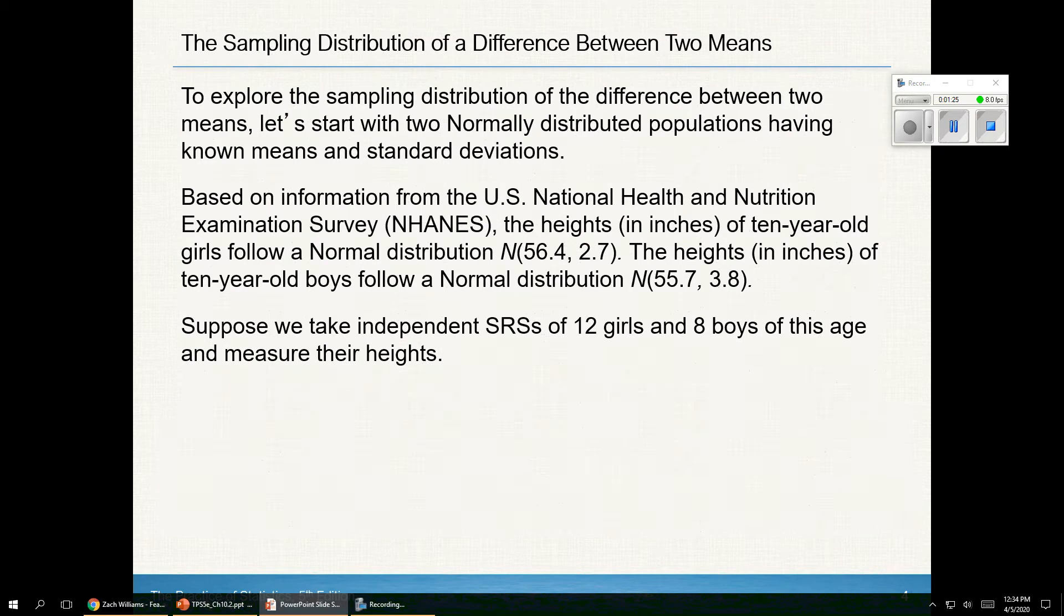To explore the sampling distribution of the difference between two means, let's start with two normally distributed populations where I know μ₁ and I know σ. For example, based on the information from the U.S. National Health and Nutrition Examination Survey, the heights of a 10-year-old girl follows a normal distribution with mean 56.4, standard deviation 2.7.